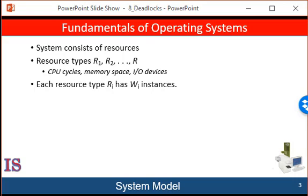A thread must request a resource before using it, and must release the resource after using it. A thread may request as many resources as it needs to carry out its designated task. Obviously, the number of resources requested may not be greater than the total number of resources available on the system. In other words, a thread cannot request two network interfaces if the system only has one.